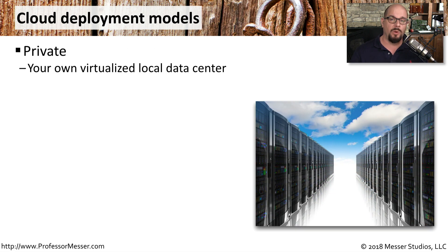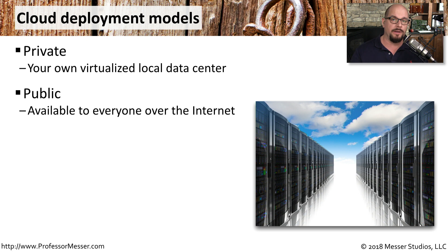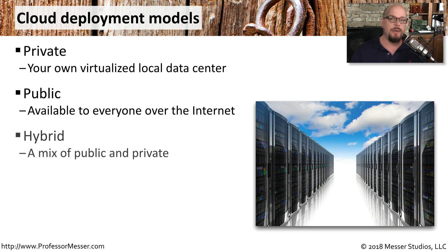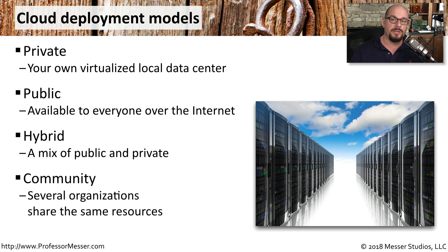There are many different ways to deploy a cloud. One is to have the entire cloud internal to your organization — this is a private cloud where you're building out your own virtualized local data center. A public cloud would be one that's available to everyone on the internet. When you go to Microsoft or Amazon and take advantage of their cloud-based offering, you're using a public cloud. A hybrid cloud offering might be a mix of the two, where part of the cloud is private and other parts are available to third parties. And with a community cloud deployment model, you're expanding on a private cloud and allowing many different organizations to share the same resources.